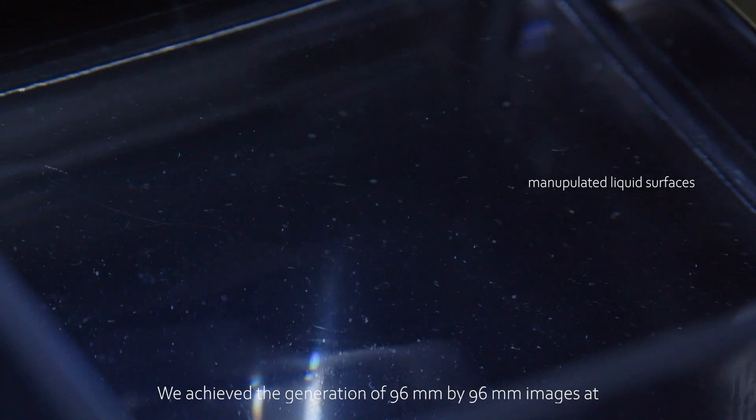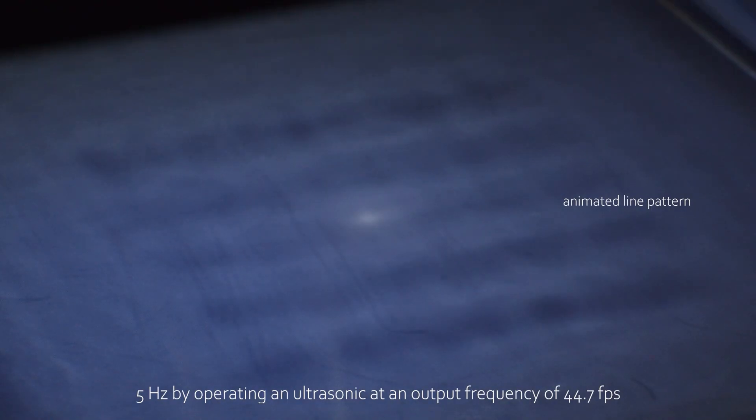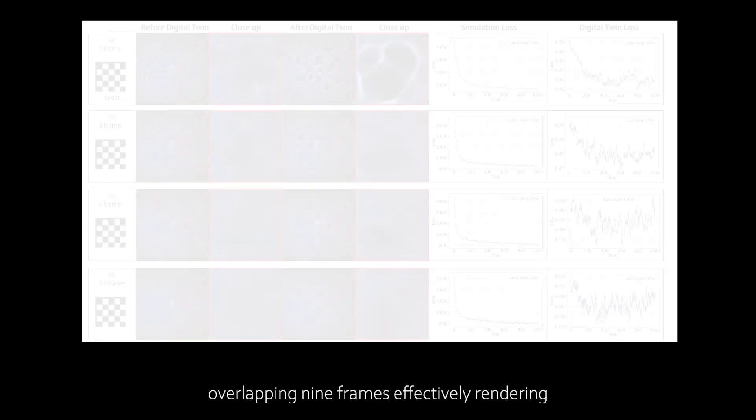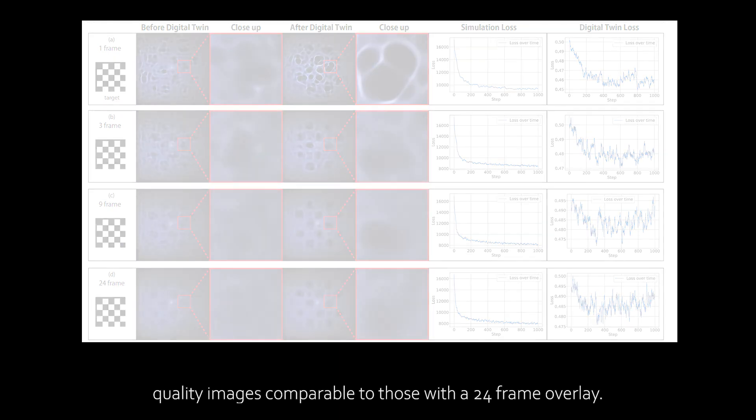We achieved the generation of 96 mm by 96 mm images at 5 Hz by operating an ultrasonic at an output frequency of 44.7 FPS. Overlapping 9 frames effectively rendering at approximately 5 Hz produced high-quality images comparable to those with a 24-frame overlay. This method strikes an optimal balance between visual fidelity and computational efficiency.